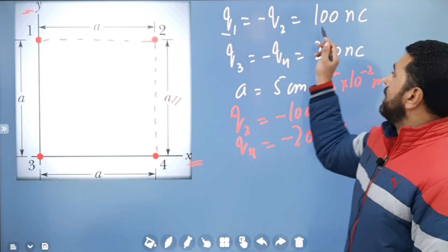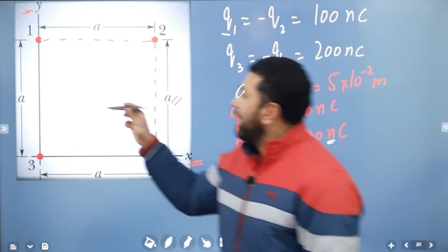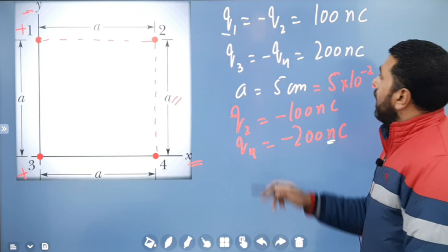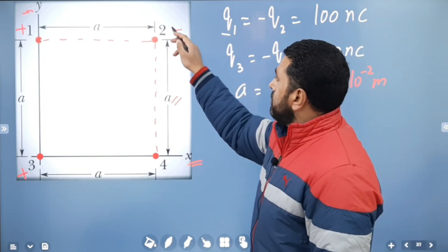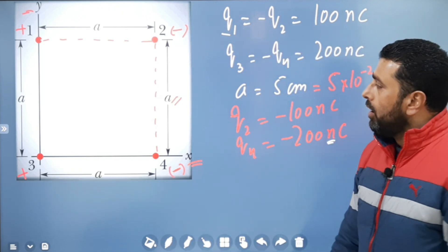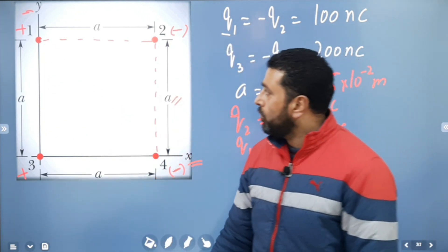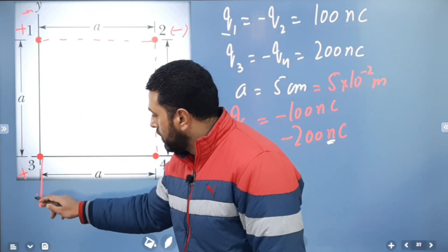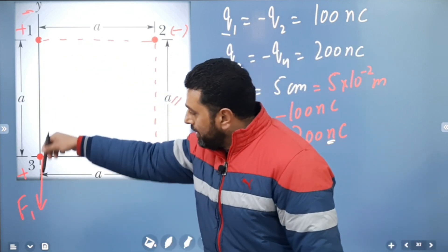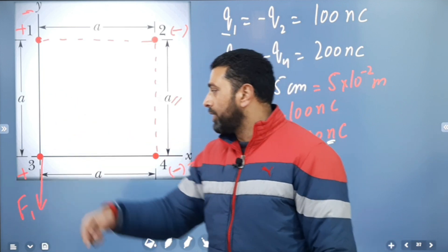Particle 1 is positive — plus 100 nanocoulombs — and particle 3 is also positive. Particles 2 and 4 are negative. Since particles 1 and 3 are both positive, particle 1 exerts a repulsive force on particle 3 directed in the negative direction of the Y-axis. I'll call this F1. It already lies along the Y-axis, so we don't need to resolve it — it only has a Y component, in the negative direction.